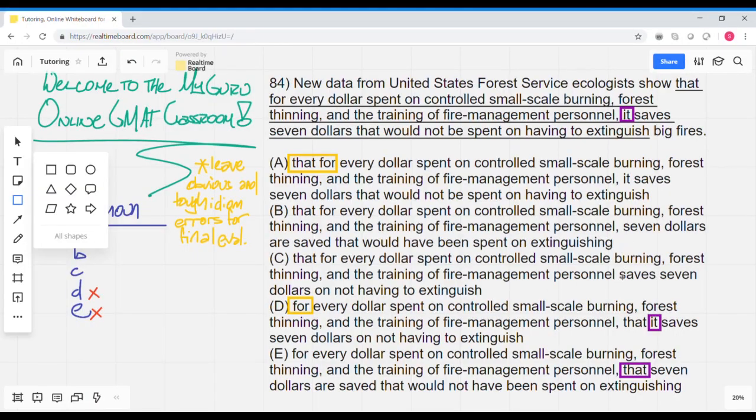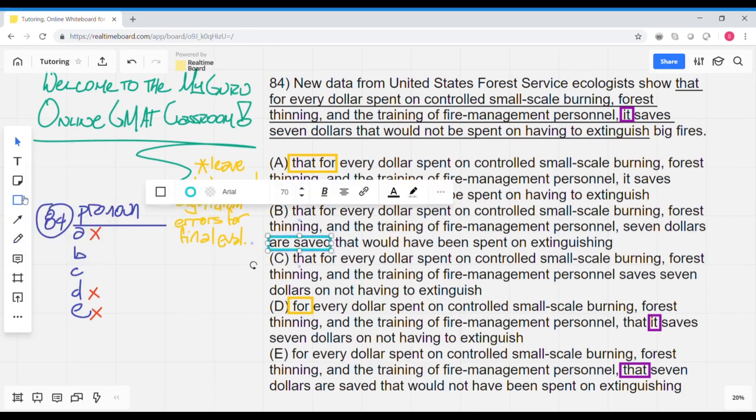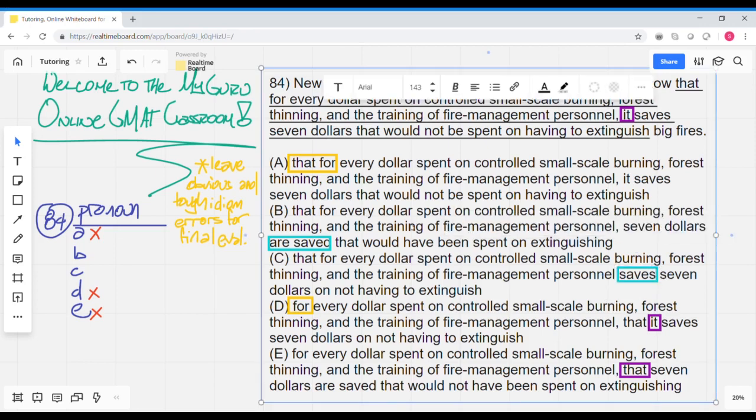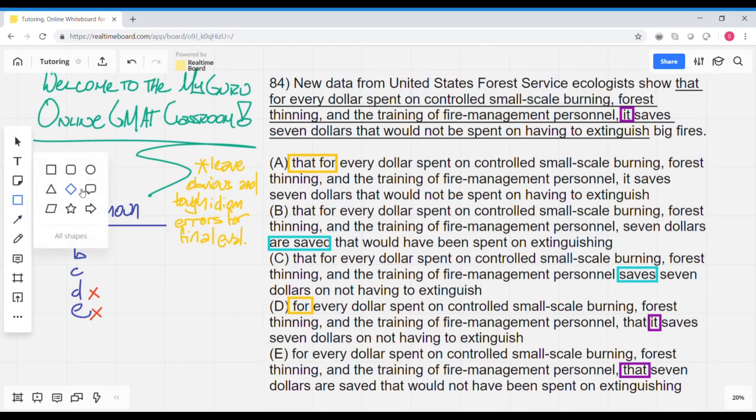We've got are saved versus saves. And we want to know whether we should be in the present tense or the past tense. In the rest of the sentence, we can see that the dollar spent on controlled small-scale burning, and that's still the same in choice C as well, would be something that's happened in the past. So choice C is out for a tense issue.